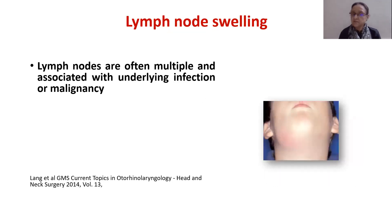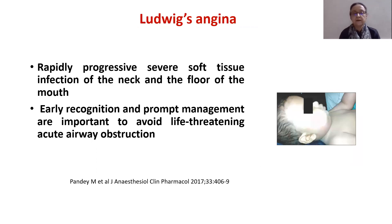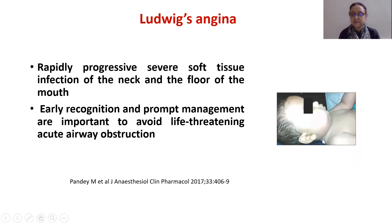The lymph nodes may be solitary or often multiple and are associated with underlying infection or malignancy. Ludwig's angina is a rapidly progressive severe soft tissue infection of the neck and the floor of the mouth; the swelling compromises the airway. Early recognition and prompt management are important to avoid life-threatening acute airway obstruction.